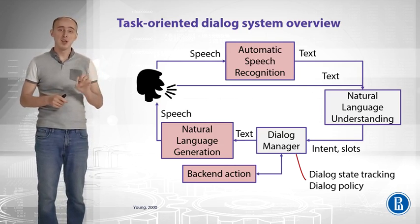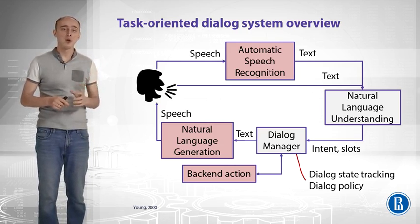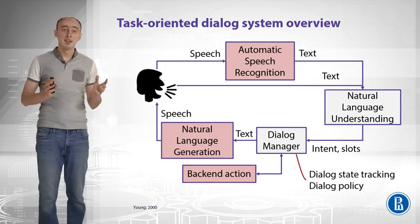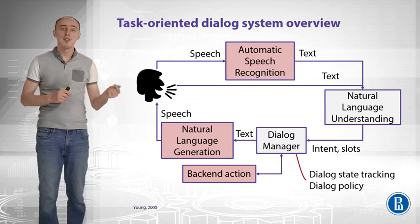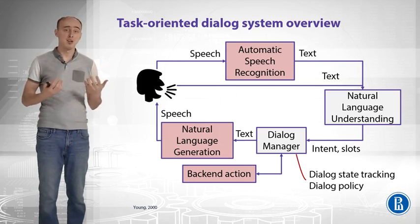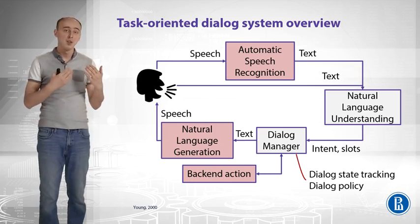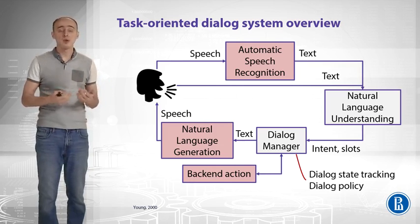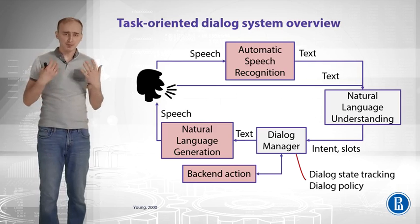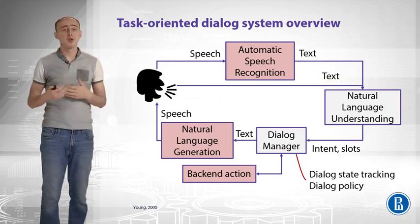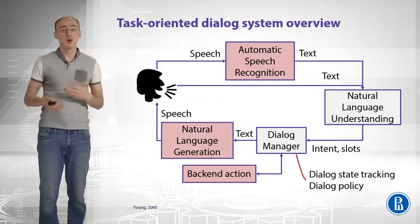The Dialog Manager can query a backend like Google Maps or Yelp or any other, and then it has to say something to the user — we need to convert the text from Dialog Manager to speech with some natural language generation. The red boxes here are the parts of the system that we don't overview because that will take a lot of time, and the system can actually work without those. You can take the user input as text so you will not need ASR, and you can output your response as text as well so you don't need natural language generation. And sometimes you don't need a backend action to solve the user's task.